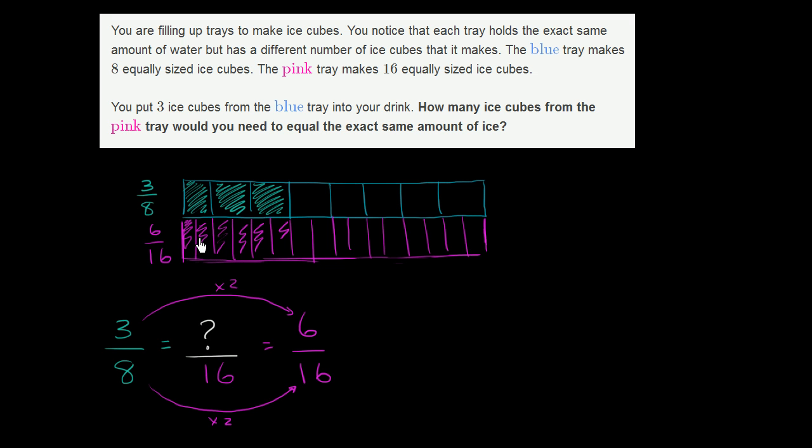Well sure it does, because for the pink ice tray you have two ice cubes for every one that you have in the blue ice tray. So in the blue ice tray you have eight equally sized cubes. Well, for each of those you're going to have two at the pink ice tray, so you multiply by two to have sixteen equally sized cubes. And out of the blue tray, if you take three, well that equivalent amount - for each of those cubes you would get two from the pink ice tray. So you're multiplying by two right over there.